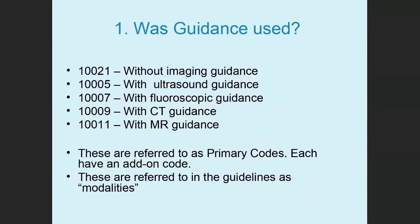The first question: was guidance used? The codes list specific types of guidance. 10021 — no guidance. 10005 — ultrasound guidance. 10007 — fluoroscopic guidance. 10009 — CT guidance. 10011 — MR guidance. These are referred to as primary codes, and each of these is paired with an add-on code.